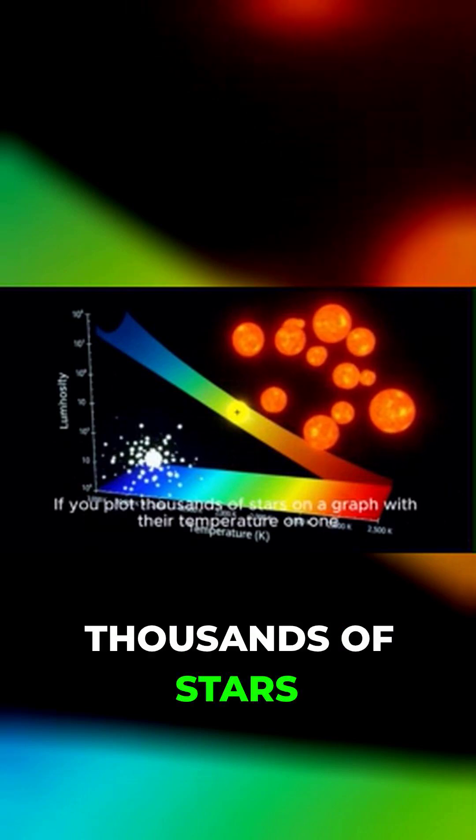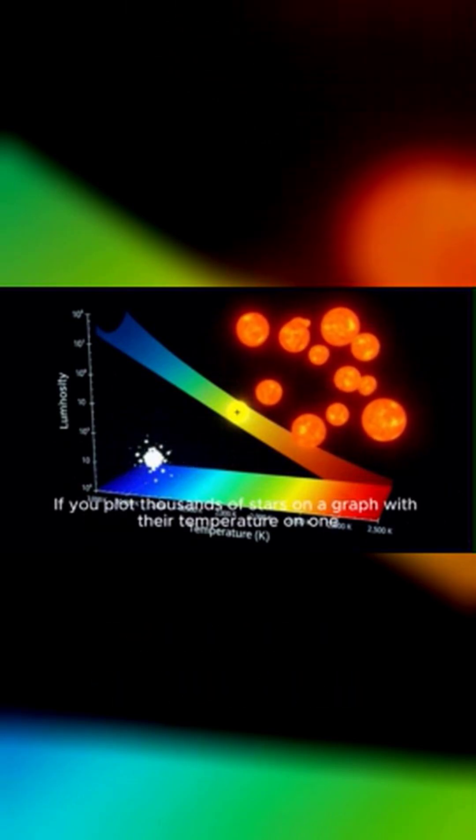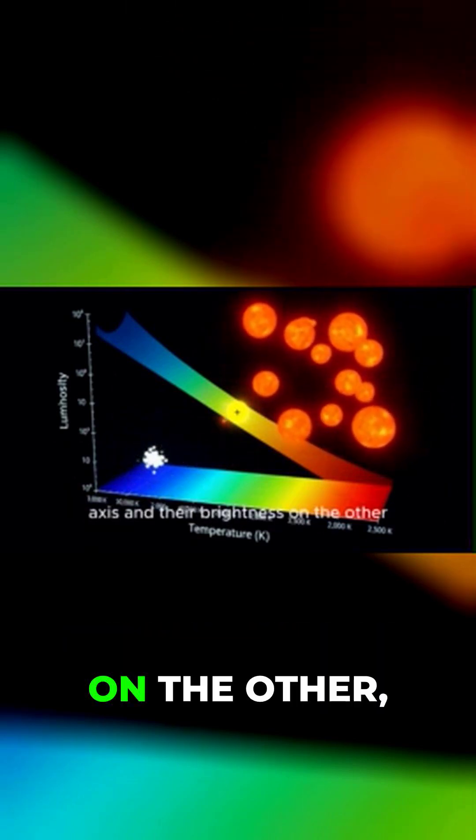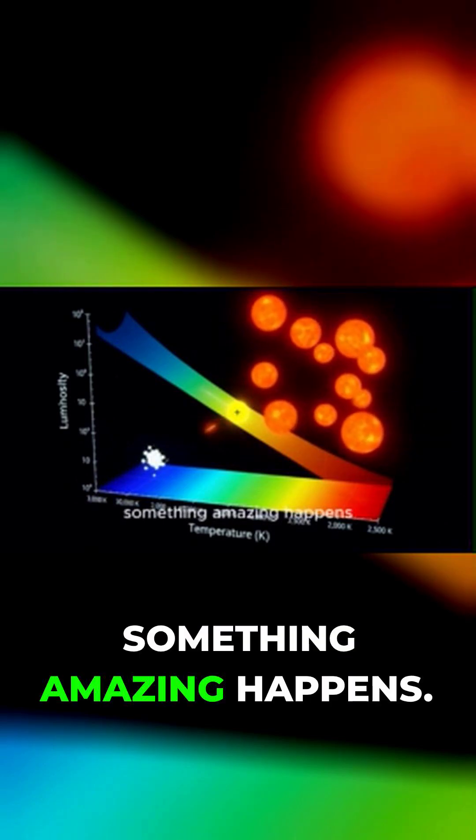If you plot thousands of stars on a graph with their temperature on one axis and their brightness on the other, something amazing happens.